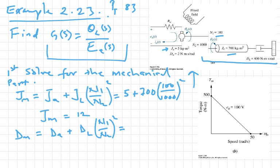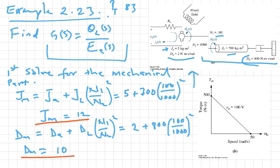Our D_a, we can see that D_a is given as 2 Newton-meter-seconds there, and then plus D_L which is given here as 800. Then we have the ratio again, 100 over 1000 whole thing squared. If you compute this you will find D_M to be equals to 10. So we have the value for our D_M, J_M, and we have the value for the equivalent viscous damper.